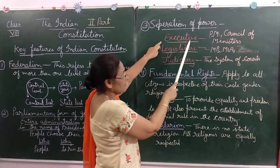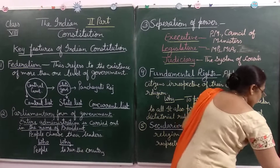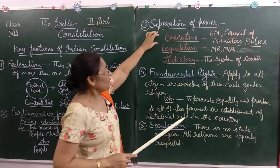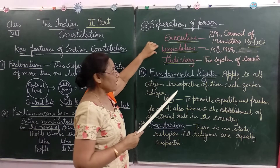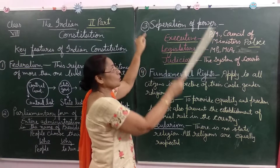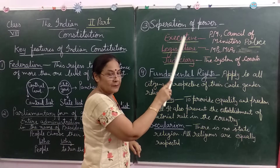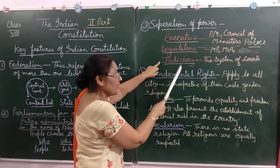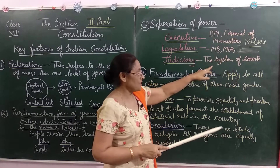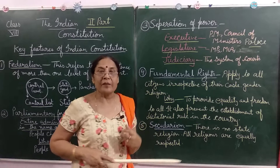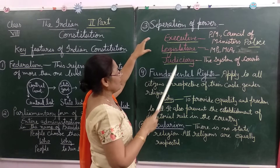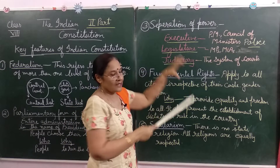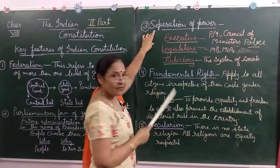IAS and IPS officers — all these categories come under the Executive. Third is the Judiciary, which is the system of courts. The Judiciary settles disputes and interprets the laws. Our constitution clearly defines the powers and functions of all three organs of government, so that they do not interfere with each other or misuse their power. This is the third key feature of our constitution.